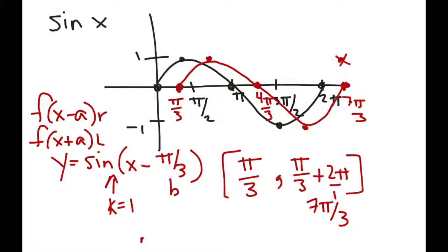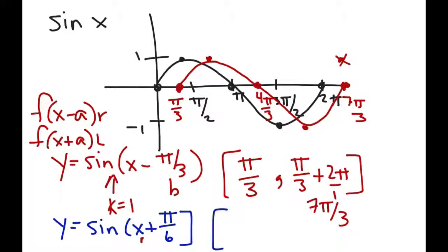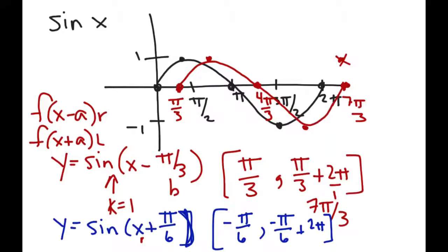Now let's talk about what happens if you move the other direction. If I do y equals the sine of (x plus π/6), this is going to be a shift to the left by π/6. So my interval is going to start at negative π/6. Why does it start at negative π/6? Because I'm shifting to the left π/6. And then it's going to end at negative π/6 plus 2π, which is 11π/6.